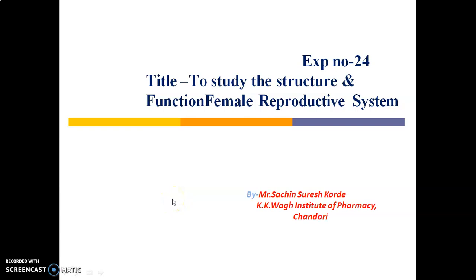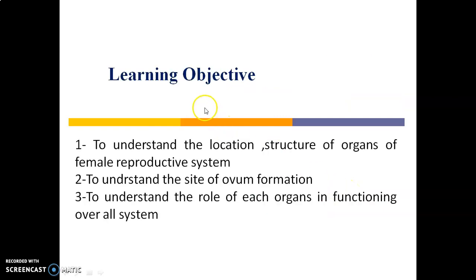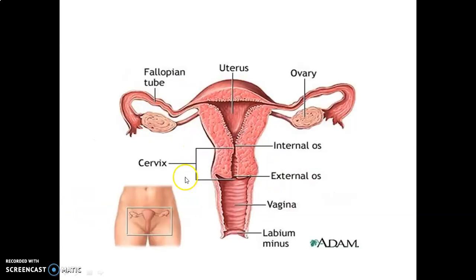Good morning to all dear students. Today we are going to study experiment number 24 of HAP — Human Anatomy and Physiology — titled 'To Study the Structure and Function of the Female Reproductive System.' I am Mr. Sachin Suresh Kolde from KKW Institute of Pharmacy, Chandori. The learning objectives of this experiment are: to understand the location and structure of organs of the female reproductive system, to understand the site of hormone formation, and to understand the role of each organ in the overall functioning of this system.